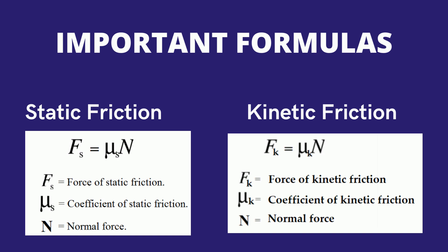The coefficient of static friction is denoted by the Greek letter mu with the subscript s. The force of static friction equals mu sub s times the normal force of the body. For kinetic friction, the coefficient is denoted by mu sub k, and the force of kinetic friction is equal to mu sub k times the normal force of a body. It is expressed in Newtons.